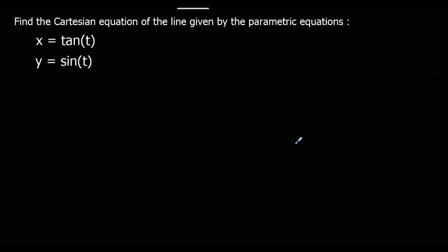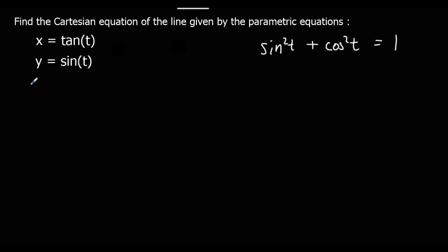The second equation here is trigonometric, with two trig equations. With trigonometric parametric equations we almost always use the identity sin²t + cos²t = 1 to eliminate the parameter. We need one equation rearranged to sin²t = … and the other to cos²t = …, then substitute both into the identity. For the y equation, squaring both sides gives y² = sin²t.